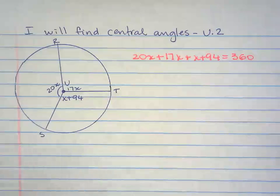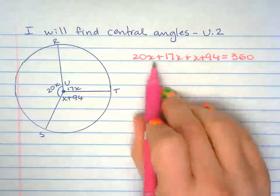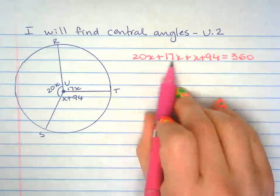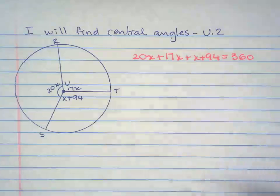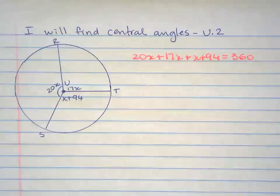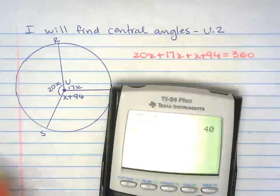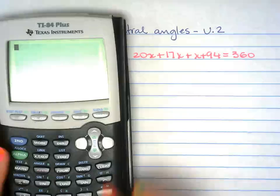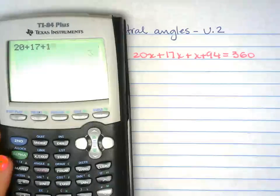You just need to do some algebra here and solve for x. First, you combine like terms, so 20x plus 17x plus 1x - that's 20 plus 17 plus 1.